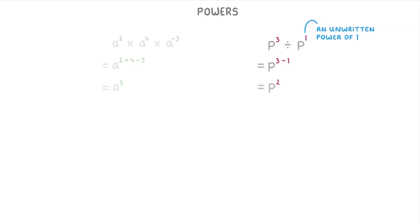In this next one, we have three terms being multiplied together, but the technique that we use is exactly the same — we just add together all of the powers. So a to the power of two plus four minus three, which overall gives us a to the power of three. For p cubed divided by p, the p term looks like it doesn't have a power. But whenever you have a number or letter by itself, it really just has an unwritten power of one. So we just do p to the power of three minus one, which is p squared.